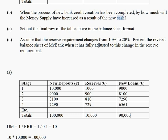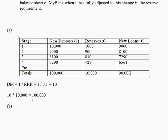Part B: When the process of new bank credit creation has been completed, by how much will the money supply have increased as a result of the new cash? The money supply would have increased by the total of the new deposits column — in this case, 100,000 euros. That 100,000 euros includes reserves of 10,000 and new loans of 90,000.